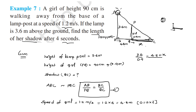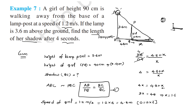So 4 = (4.8 + x)/x. Cross-multiplying: 4x = 4.8 + x, so 3x = 4.8, therefore x = 1.6 meters. The shadow will be 1.6 meters. In this way we can find the length of her shadow. Thank you.